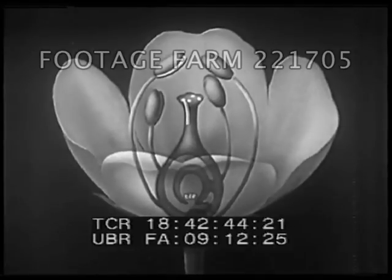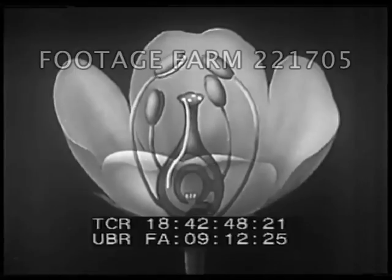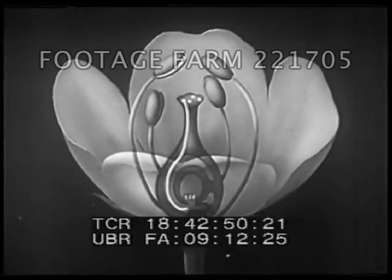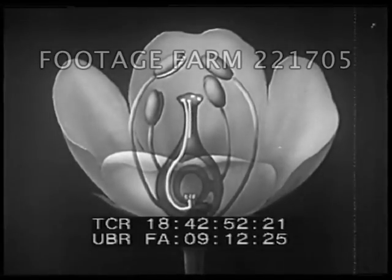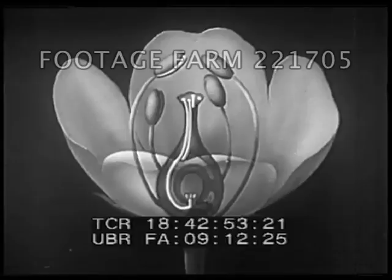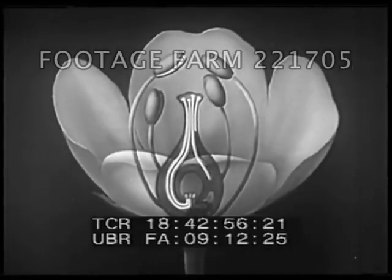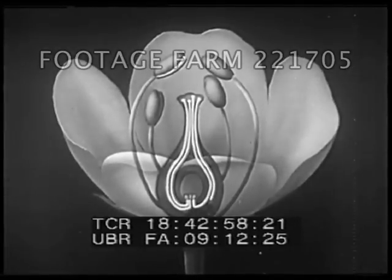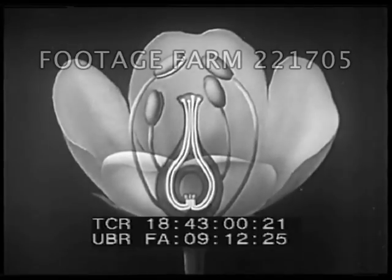The pollen germinates and grows into the female part of the plant where the egg is located. A male sperm from the pollen grain fertilizes the egg, which becomes the first cell of a new plant inside the seed. This is a kind of sexual reproduction.